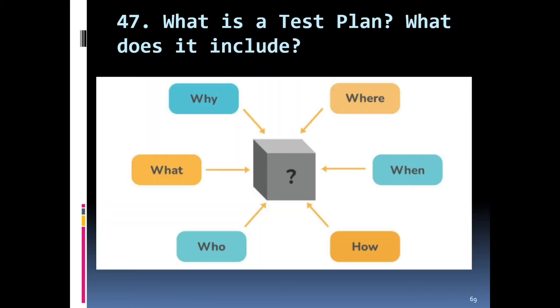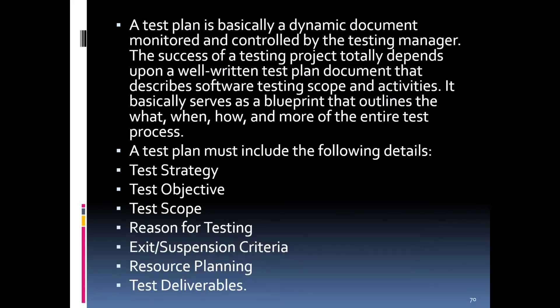What is a test plan and what does it include? A test plan covers why, where, when, how, who, and what. It is a dynamic document monitored and controlled by the testing manager. The success of a testing project depends on a well-written plan that describes testing scope and activities. It serves as a blueprint and must include test strategies, objectives, scope, reason for testing, exit and suspension criteria, resource planning, and test deliverables.